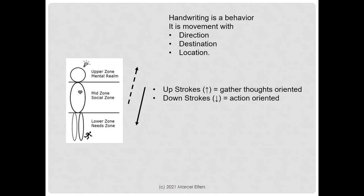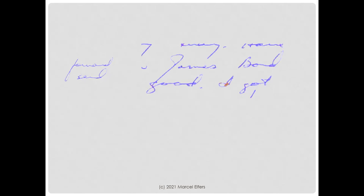Downstrokes are action-oriented — our hand contracts, and a downstroke also reveals the degree of our determination and decision-making. This Richard Ramirez example clearly shows that rhythmic movements have a lighter upstroke and a heavier downstroke, and that is normal. We see that repeat itself — light up, heavy down.